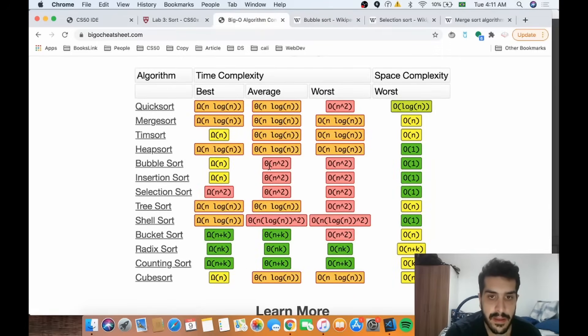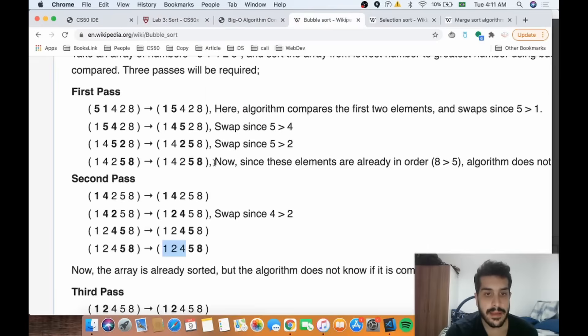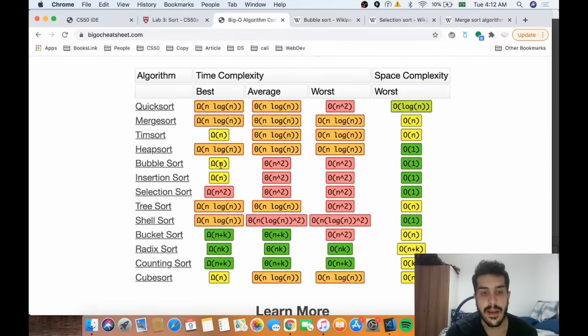But that's for the worst case scenario. However, if the array is already sorted, basically we can see that it's sorted because in the first pass all the values will already be in the right order. So we'll only need one iteration, which means it's O(n).